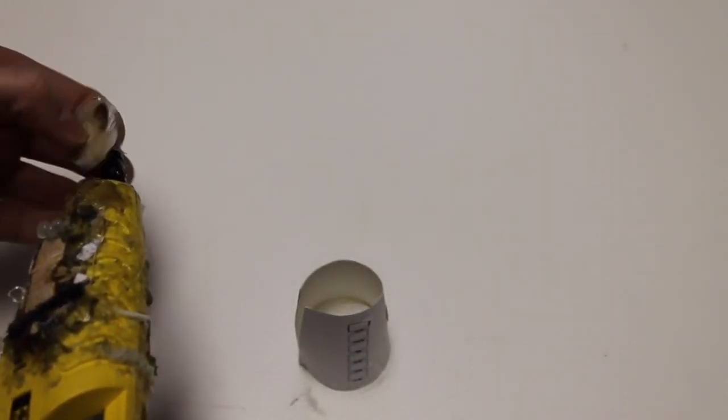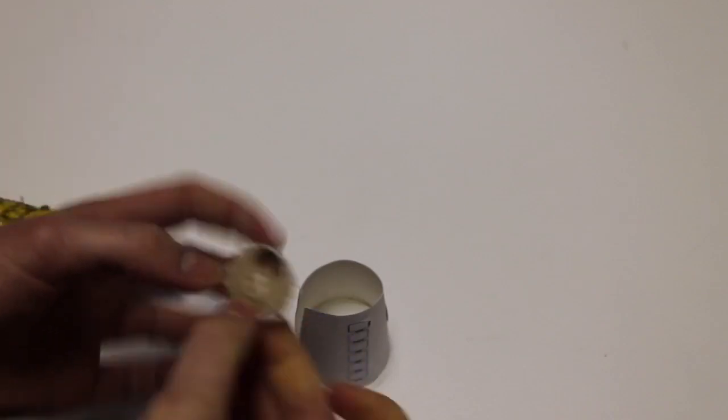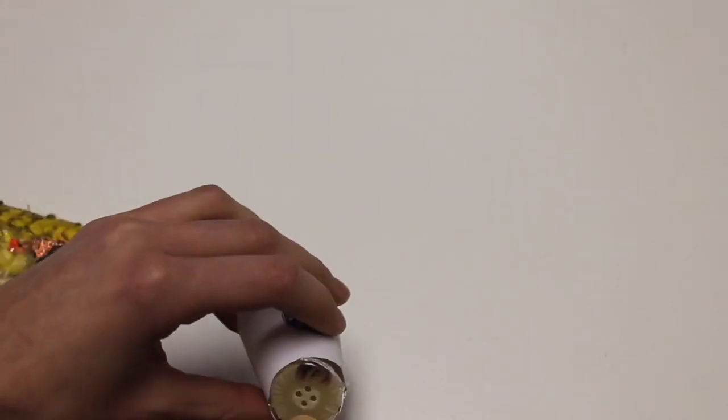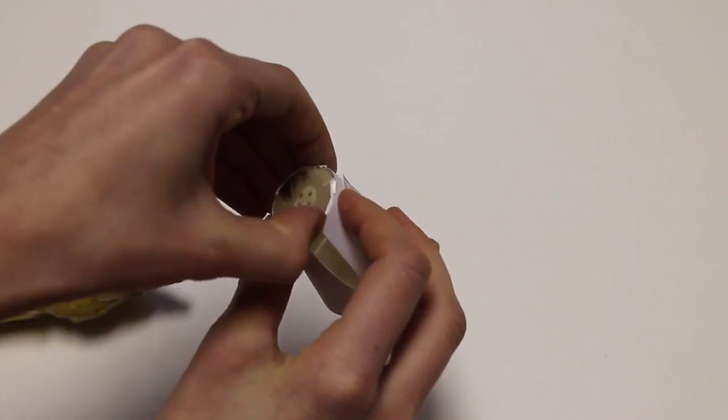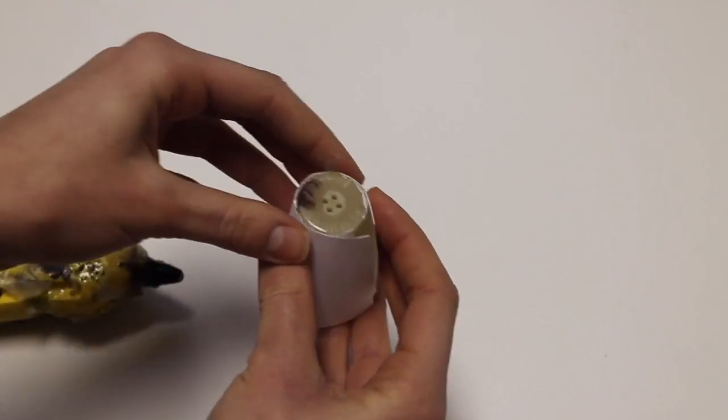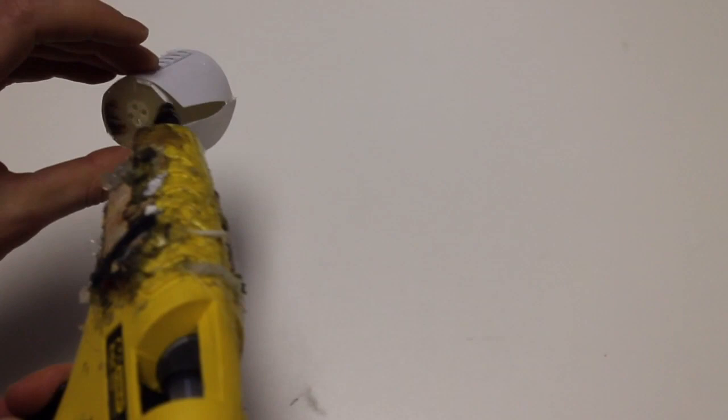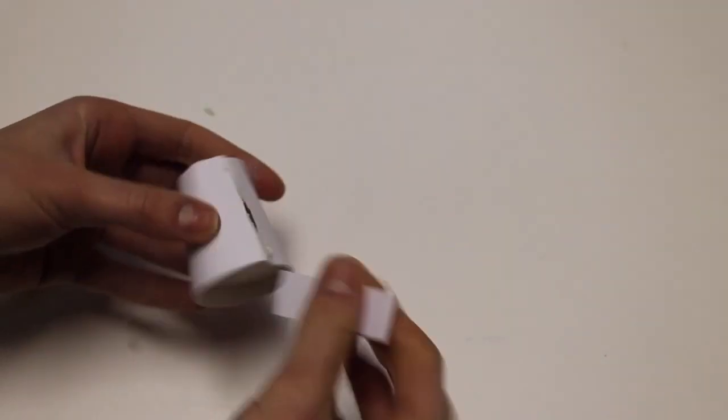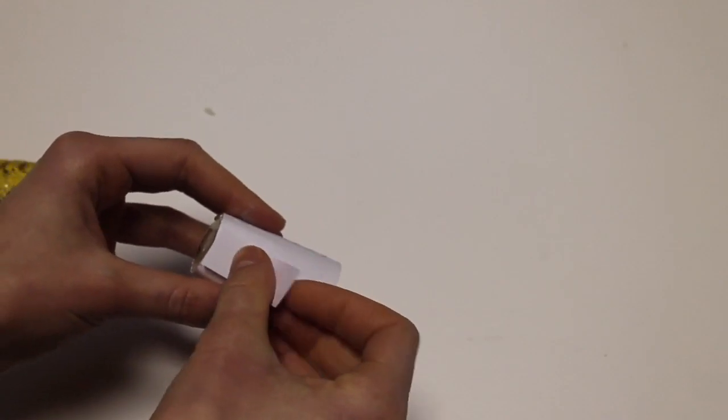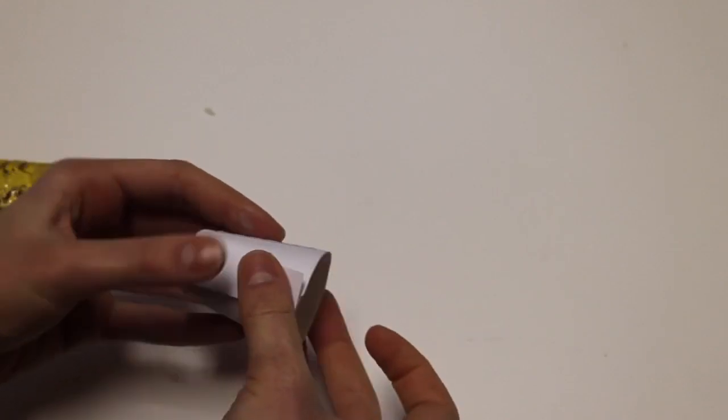So once I finish that I'm going to grab a button that's the right size for the bottom and I'm going to glue that on. To cover the seam where the paper meets I'm going to take another strip of paper and glue that on.